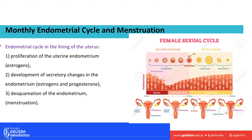The monthly endometrial cycle involves three events: proliferation of the uterine endometrium in response to estrogen; development of secretory changes in the endometrium in response to estrogen and progesterone; and desquamation of the endometrium — menstruation. Menstruation is the shedding of the endometrial lining when an egg has not been fertilized. During ovulation, the endometrium is being prepared to receive the ovum.